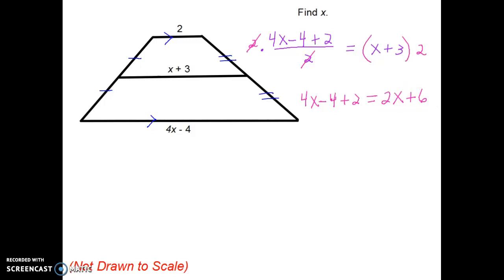So last, I just have algebra to finish solving for x. I'm going to put my expressions with x on the left side of my equation. So I have to subtract 2x. On the other side, I would have 6. I would need to add 4 and subtract a 2.